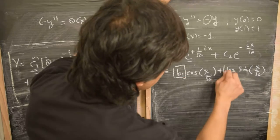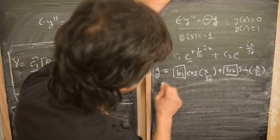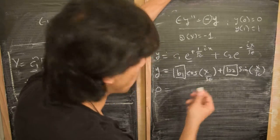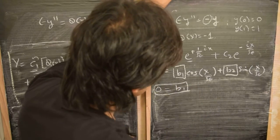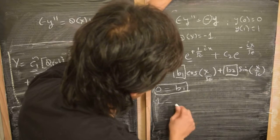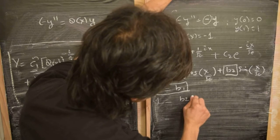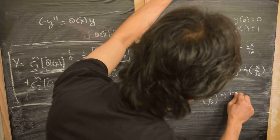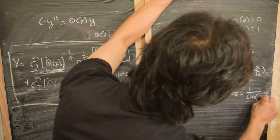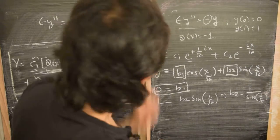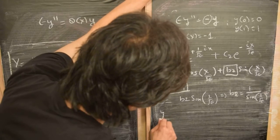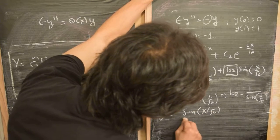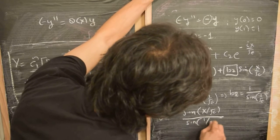Now we need to find constants b₁ and b₂ using the boundary conditions. From y(0) = 0: cos(0) = 1, so b₁ = 0. From y(1) = 1: b₂ · sin(1/√ε) = 1, giving b₂ = 1/sin(1/√ε). So the overall solution is: y = sin(x/√ε) / sin(1/√ε).